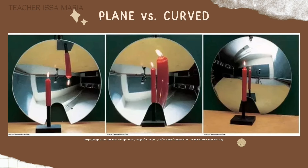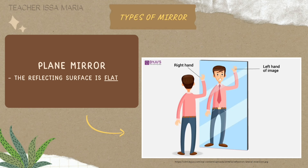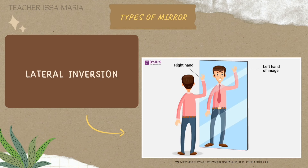We have plane and curved mirrors. In a plane mirror, the reflecting surface is flat. We have a virtual image. When you look at yourself in a plane mirror, your right hand appears as the left hand in the image — that is called lateral inversion. Lateral inversion is the reversal of the mirror image where the right side of the object appears on the left side of the mirror.